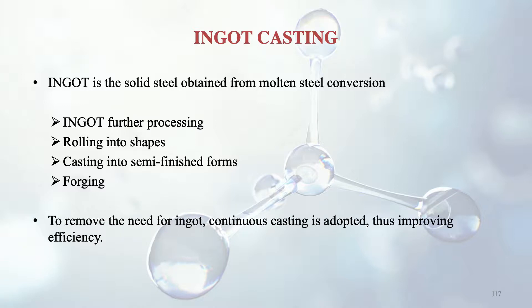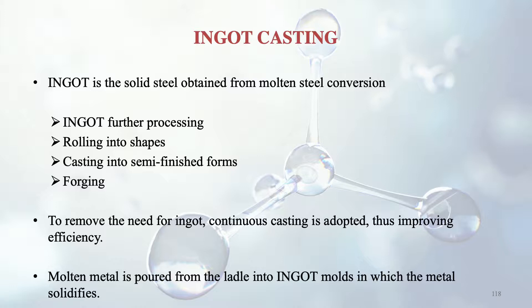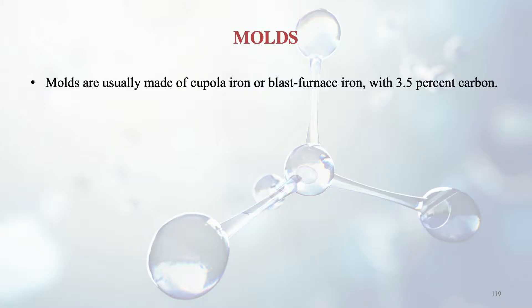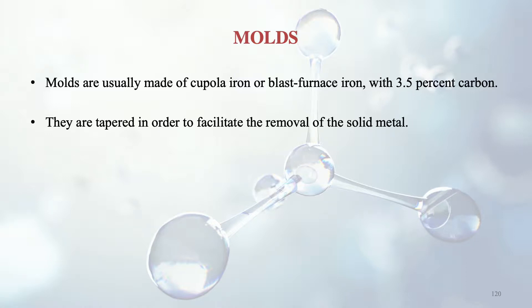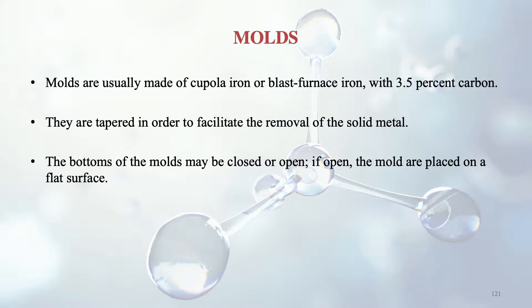To remove the need for ingots, continuous casting is also adopted to improve efficiency. In ingot casting, molten metal is poured from a ladle into ingot molds, which are usually made of cupola iron or blast furnace iron with 3.5% carbon. The molds are tapered to facilitate removal of the solid metal, and the bottoms may be closed or open — if open, they are placed on a flat surface.